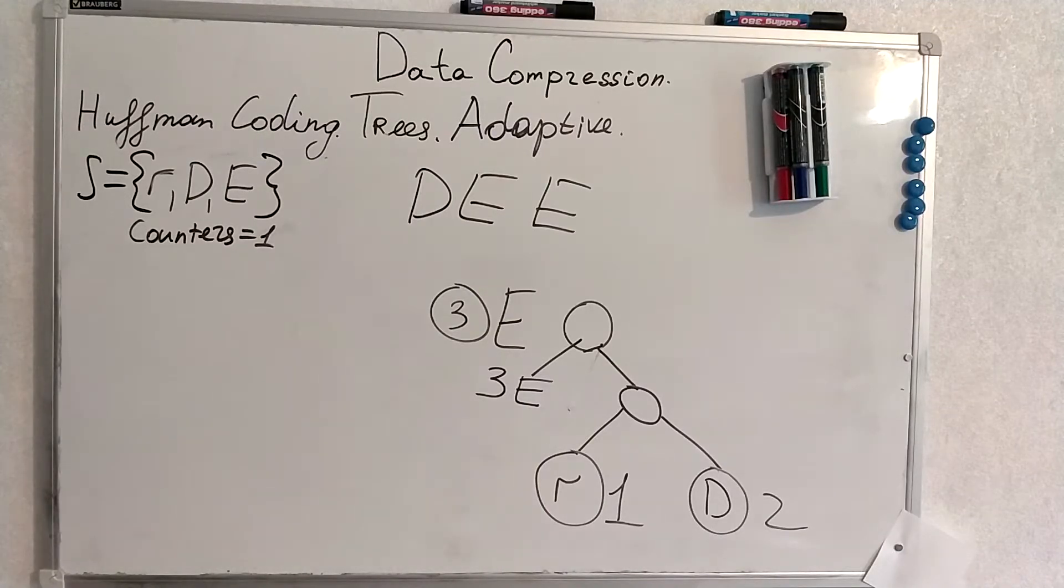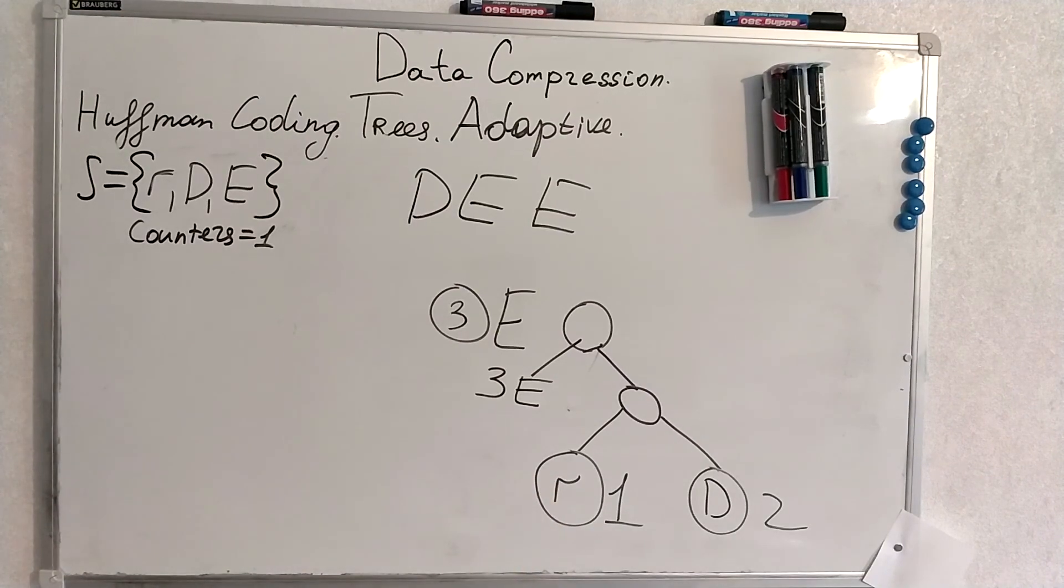The counter is three. If another D will come, the tree structure will not change. If R comes we will not change it, and there has to be some amount of consequent R to change the tree in such a manner that R will be here.